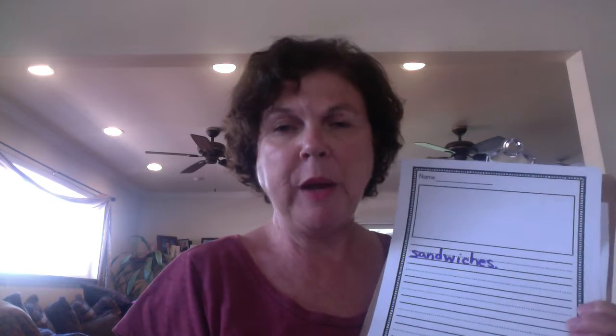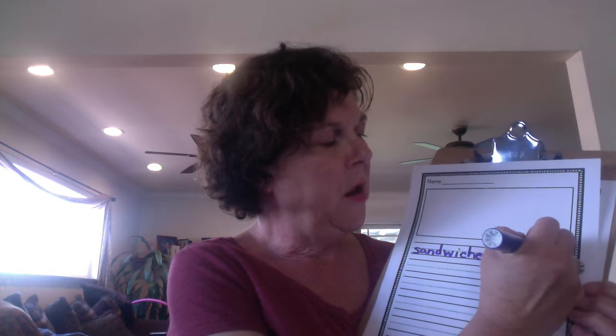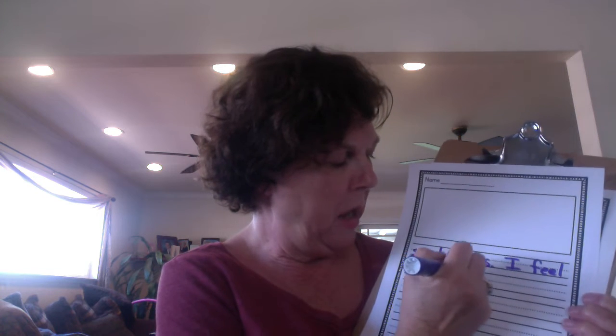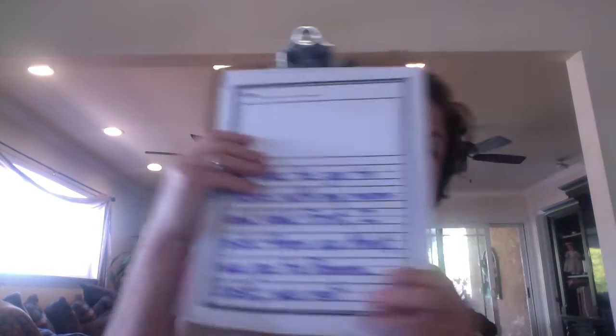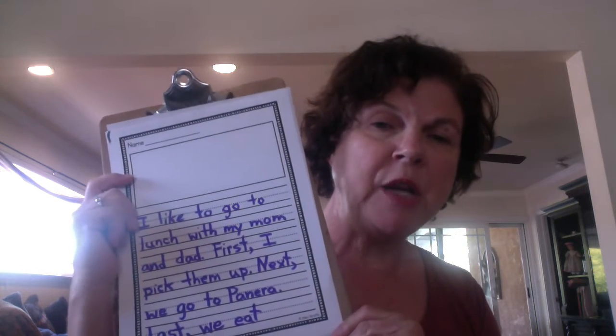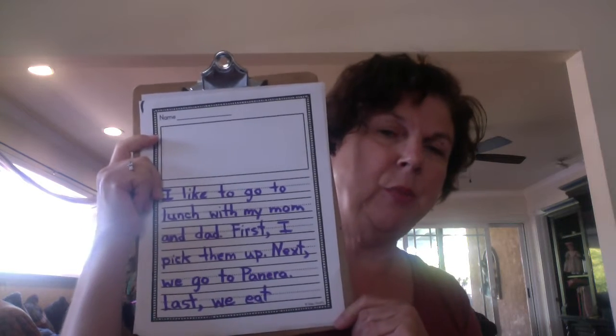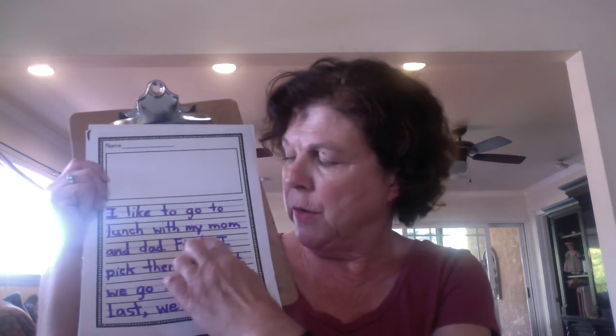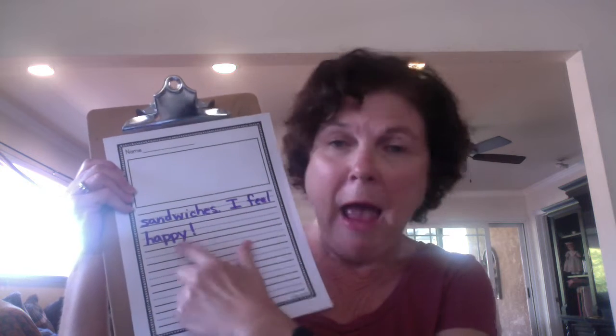I feel happy — H-A-P-P-Y. Exclamation point! So let's look at my whole story before I start to draw. I've been trying really hard to make capitals at the beginning of my sentences, spaces between my words, and punctuation at the end — like a period, exclamation point, or question mark. I like to go to lunch with my mom and dad. First, I pick them up. Next, we go to Panera. Last, we eat sandwiches. I feel happy.